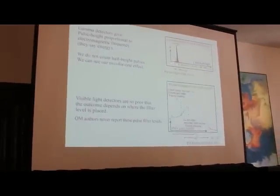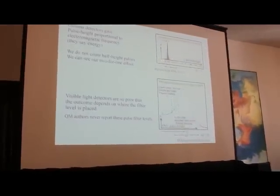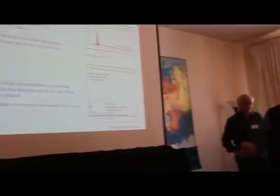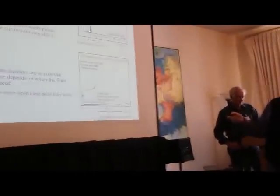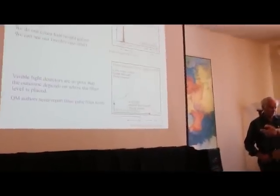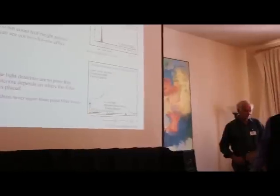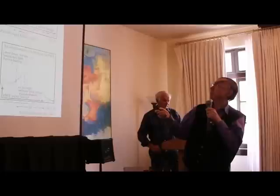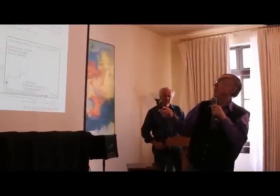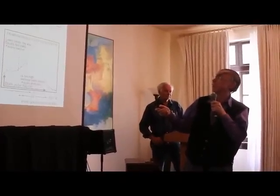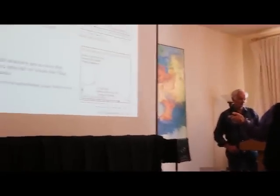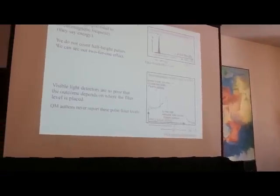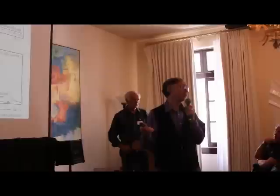There's a pulse height distribution histogram where we see a nice narrow distribution of pulse heights characteristic of the gamma ray we're using. We bracket it with our electronics to eliminate some noise, so we're looking at full-height pulses — not half pulses.